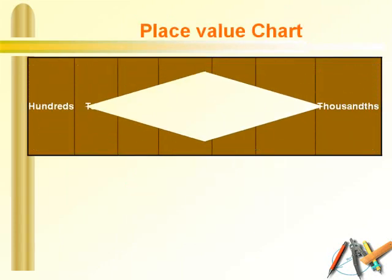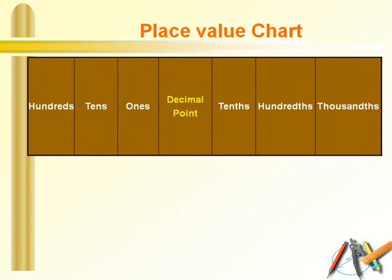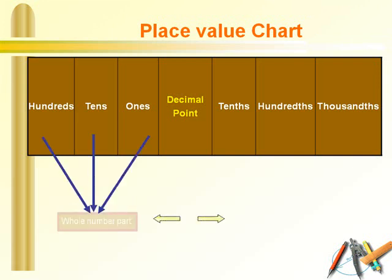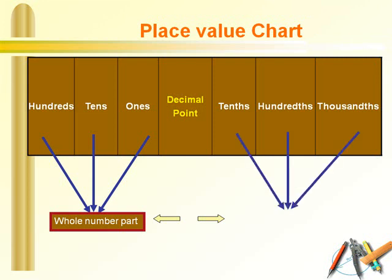This is a place value chart of a decimal number. The number formed on the left of a decimal point is called the whole number part, while the number formed on the right of a decimal point is the number whose value is less than 1.